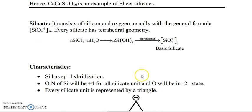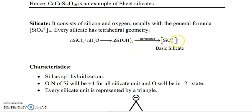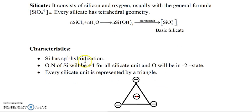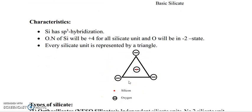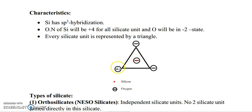Now we will see, one by one, what silicate is. It consists of silicon and oxygen atoms, usually with the general formula SiO₄⁴⁻ N. Every silicate has tetrahedral geometry. Silicon tetrachloride reacts with water to give silicon tetrahydroxide, and by deprotonation it gives the basic silicate SiO₄⁴⁻ N. The characteristics of silicate: silicon has sp³ hybridization, the oxidation number of silicon is +4 for all silicate units, and oxygen is in the −2 oxidation state. Every silicate unit is represented by a tetrahedron — the red spot indicates the silicon atom and the corners are oxygen atoms.